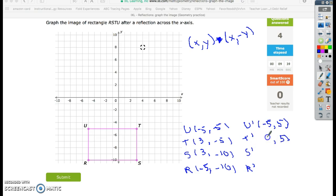The x stays the same at 3. Change negative 5 to positive 5. For S, change negative 10 to 10. And for the last point R, negative 5 stays the same, and I change negative 10 to 10.